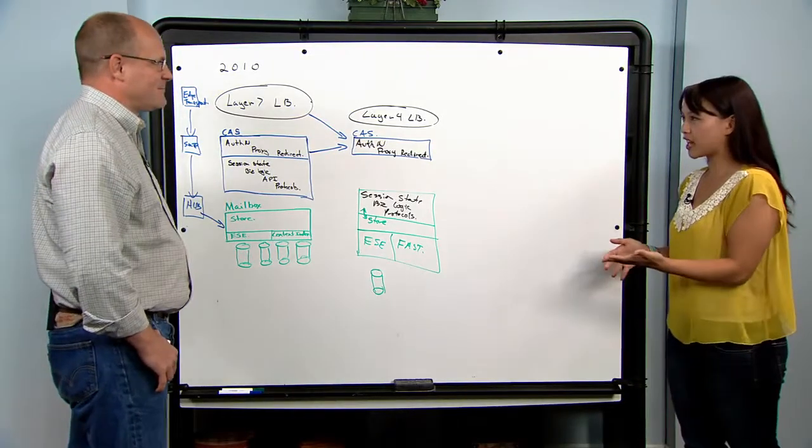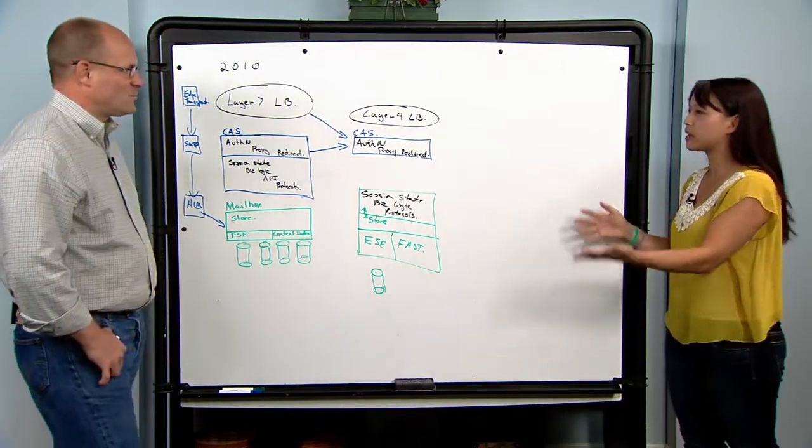So you talked about synthetic transactions and probes. So what does this actually mean in high availability?